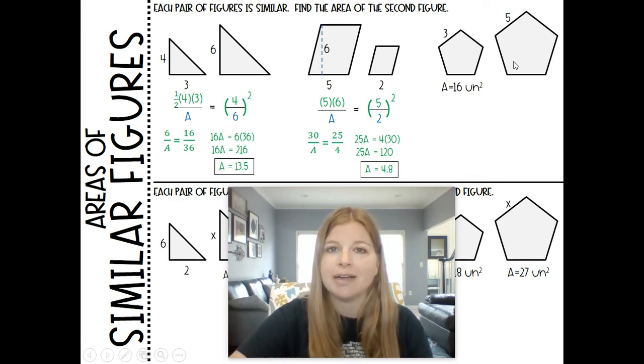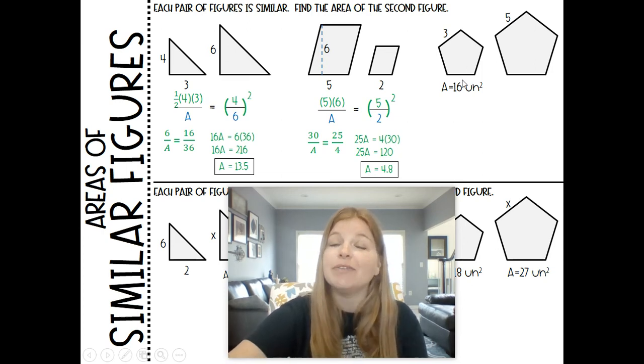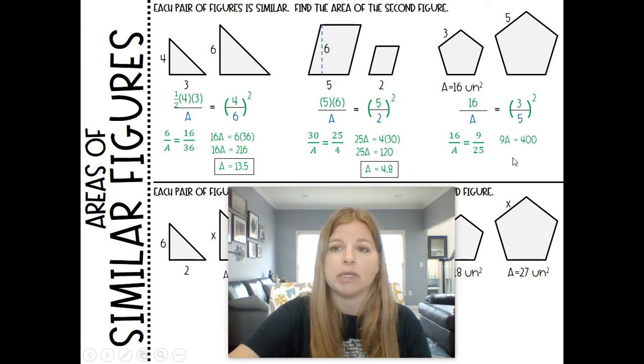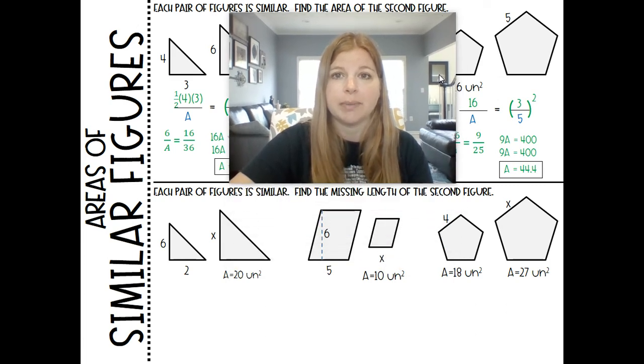Here the pentagon. I'm going to save us from having to do the whole apothem work and actually calculate the area. I'm just going to give you the area. This first one is 16. If I give you the area of the first polygon, but I don't give you the area of the second, I set it equal to the scale factor 3 to 5 squared. This becomes 16 over A equals 9 over 25. We cross multiply and we solve for A.